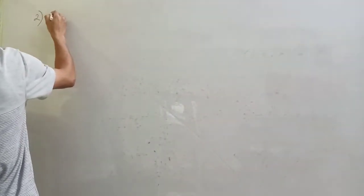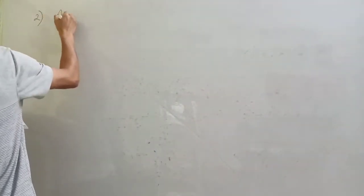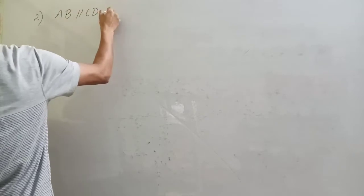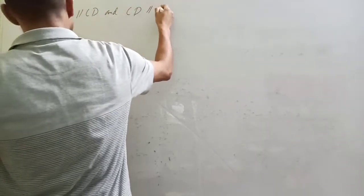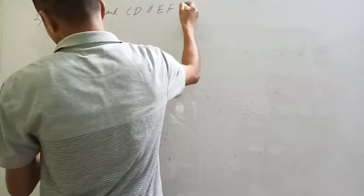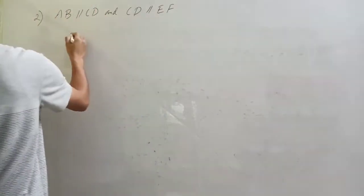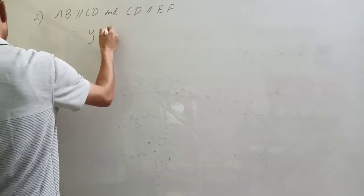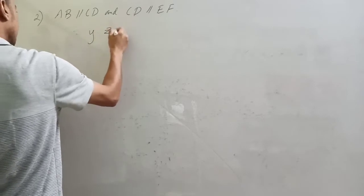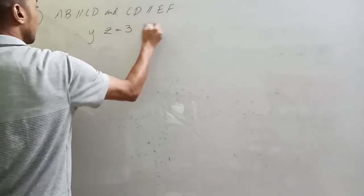Now question number 2. In the figure, AB is parallel to CD and CD is parallel to EF. The ratio y to z is equal to 3 to 7. Find x.